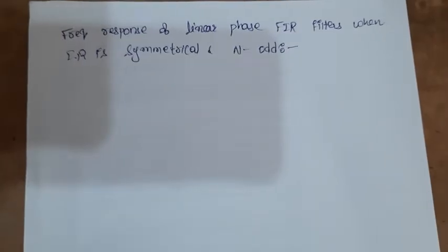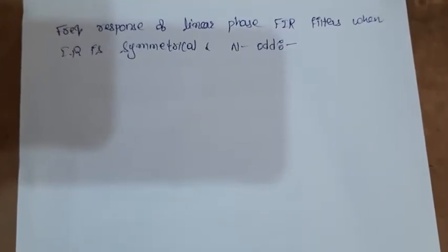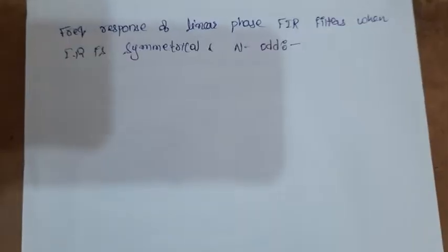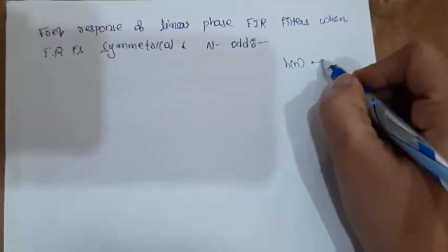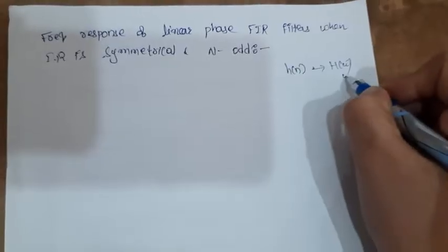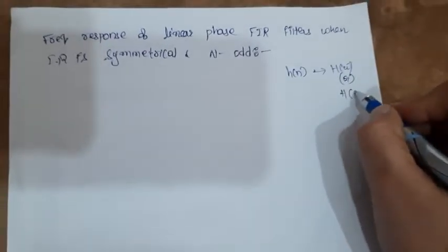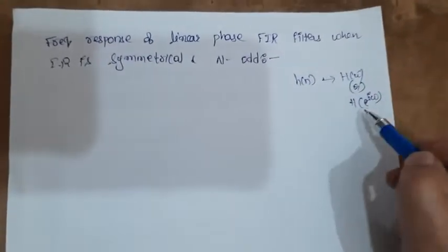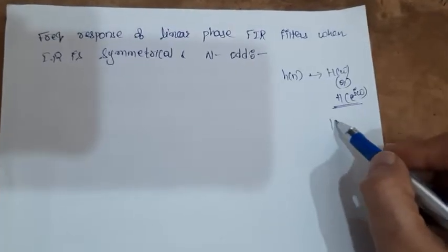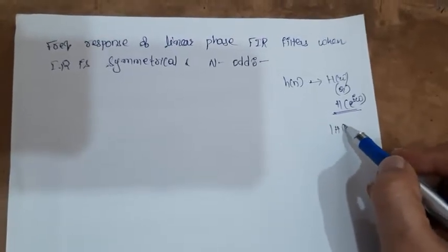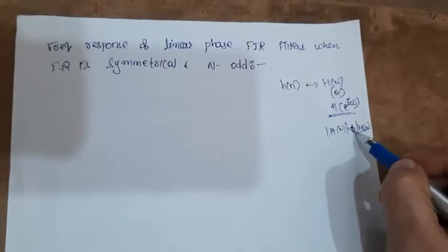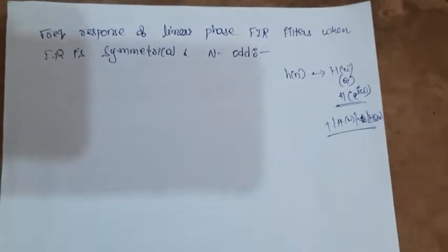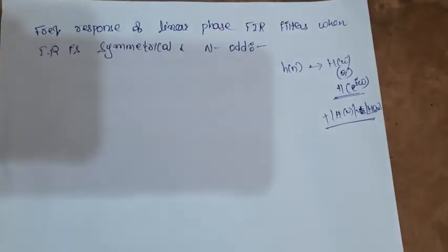The frequency response of an FIR filter is obtained by doing the Fourier transform of its impulse response h(n). After doing the Fourier transform of h(n), I will get H(ω) or H(e^jω). We need to find the magnitude function and the phase function, which together constitute the frequency response.